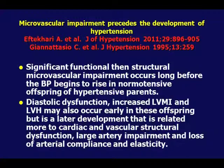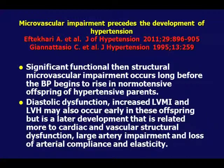Early on you have functional problems — microvascular impairment — that precedes remodeling, precedes structural problems, and precedes hypertension. For example, if you took a child at 15 years of age whose both parents had hypertension, before the child becomes hypertensive you can look at their endothelial function and do a 2D echo to pick up vascular abnormalities present before blood pressure goes up. Hypertension is not a disease — it's a marker of a preceding vascular problem that is both genetic and environmental.